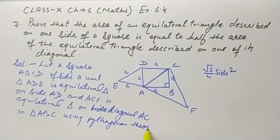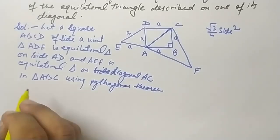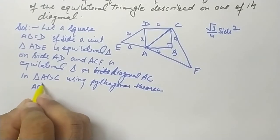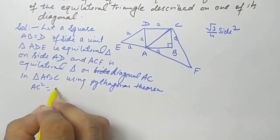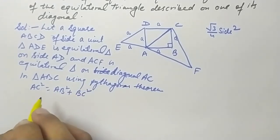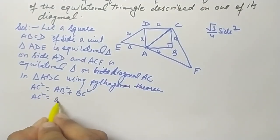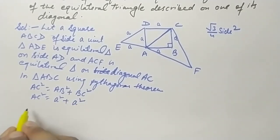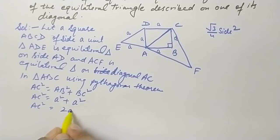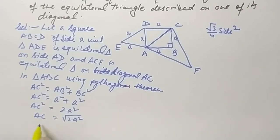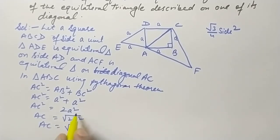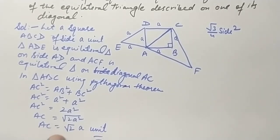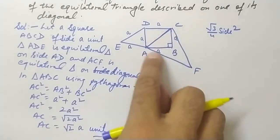Applying the Pythagorean theorem: AC² = AB² + BC² = a² + a² = 2a². Therefore AC = √(2a²) = √2 · a units. So the side of the equilateral triangle on the diagonal is √2 · a units.